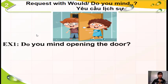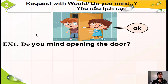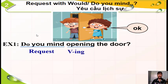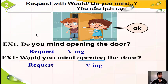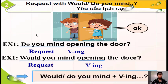'Do you mind opening the door?' Trong ngữ cảnh này, cậu con trai đang muốn nhờ cô bé con gái mở cửa cho cậu ta - đây là một yêu cầu lịch sự, nên cậu ta sử dụng 'Do you mind opening the door?' Phân tích: 'Do you mind' là phần request - yêu cầu, và 'opening' là động từ thêm '-ing'. Nếu không thích dùng 'Do you mind', cô sẽ sử dụng 'Would you mind opening the door?' - tương tự, 'Would you mind' là request và 'opening' là động từ thêm '-ing'.